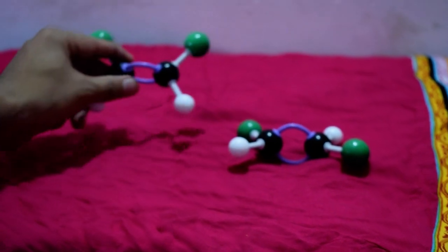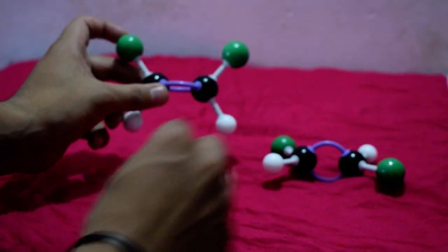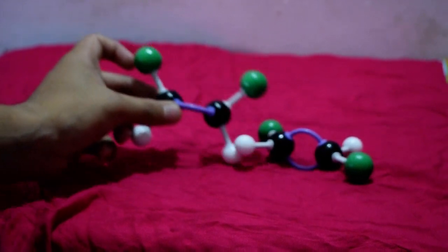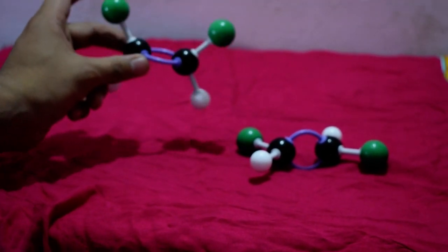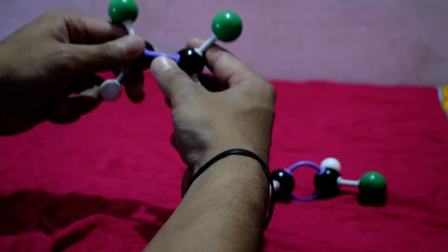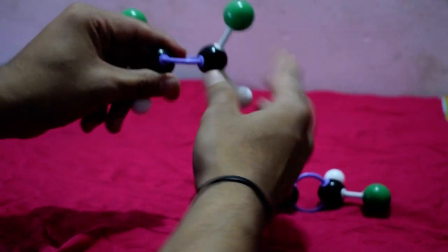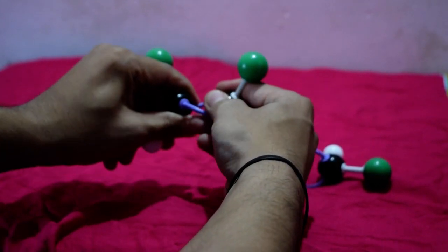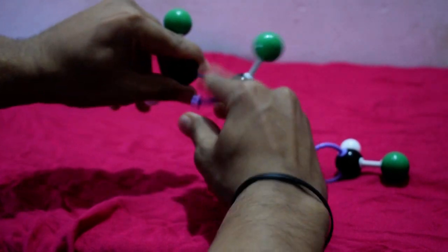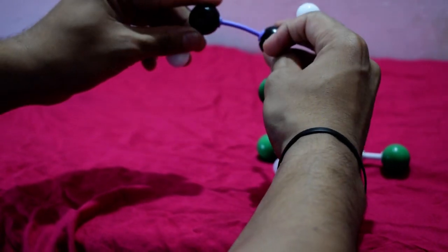See, if I want to make this as trans like this, here I have got trans. If I want to make cis as trans, if I try to rotate this, see, the bond will break. This pi bond will break. If it breaks, then only I can make it as trans.